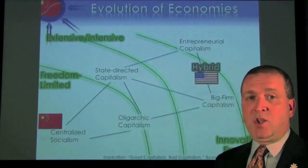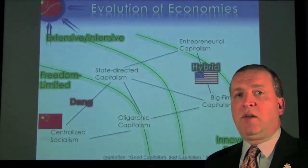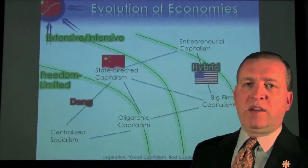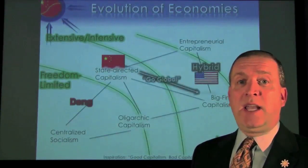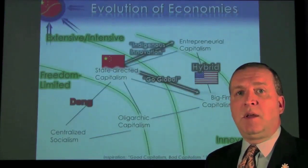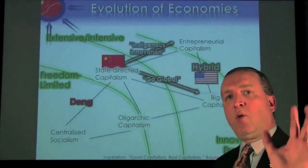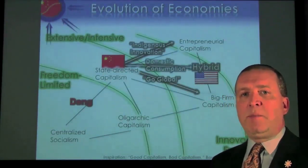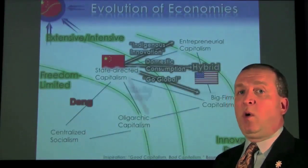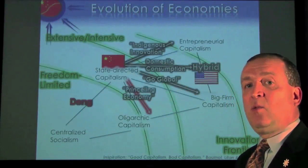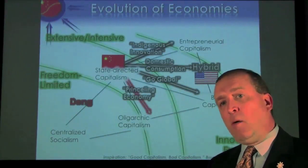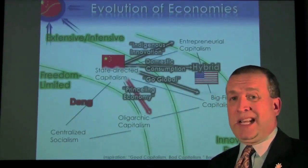Now let's look at China. China basically went from centralized socialism under Mao, then under Deng moves into state-directed capitalism. What are we hearing out of China now? Where does it want to go? We're looking at a go-global strategy, so they want to move in the direction of big firm capitalism. We see the push for indigenous innovation, wanting to move more into entrepreneurial capitalism. They want domestic-led growth, really that sweet spot where the United States is found. And most importantly, we worry about their potential to slide back into oligarchic capitalism, as expressed by the fact that so few of the elite dominate so much of the economy — what we call the princeling economy.